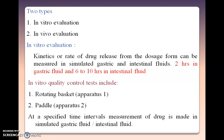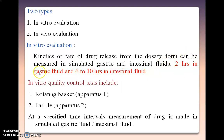There are two methods of determination of drug release: in vitro evaluation and in vivo drug release method. In in vitro evaluation, the kinetics or rate of drug release from the dosage form is measured in simulated gastric and simulated intestinal fluids. For the first two hours, drug release is determined in simulated gastric fluid, and for the next six to ten hours, it is determined in simulated intestinal fluid.